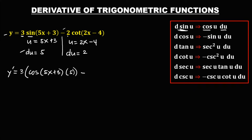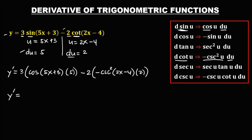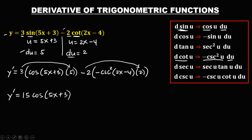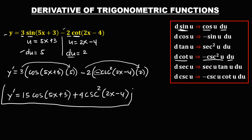Then minus: bring down the constant, so minus 2, times the derivative of cotangent, which is negative cosecant squared u, so negative cosecant squared(2x minus 4), times du which is 2. To simplify: 3 times 5 is 15, then cosine(5x plus 3). Then negative 2 times 2 is negative 4, and negative 4 times negative gives positive 4, so plus 4 cosecant squared(2x minus 4). This is now the derivative.